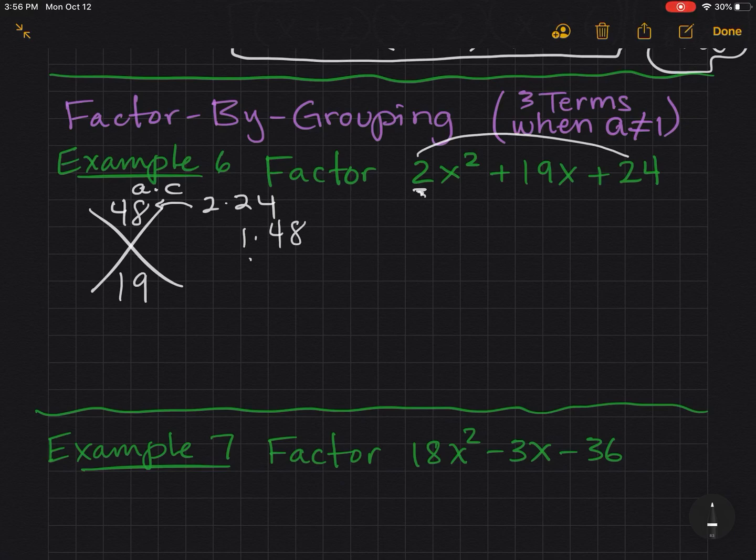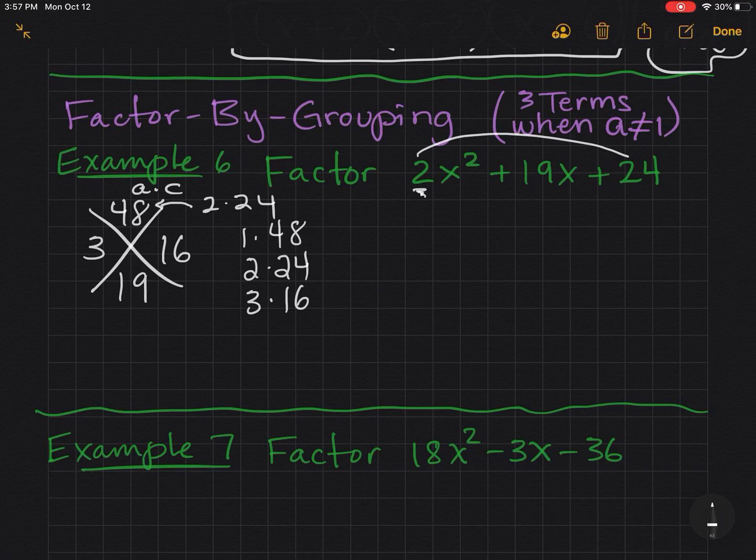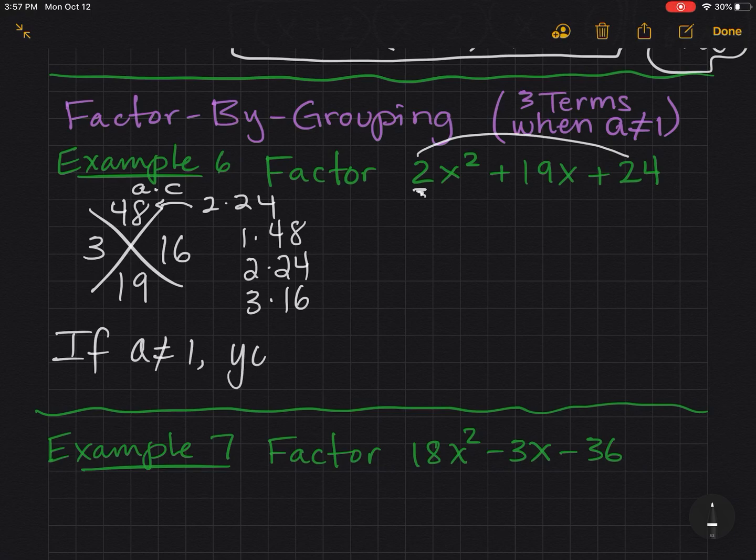Now I need two numbers that multiply to 48, but add up to 19. I'm not thinking of anything. So I'm just going to start writing some numbers down that multiply until I hit something. There we go. 3 and 16 work. They multiply to 48, but add up to 19. But if a does not equal one, you're not done.